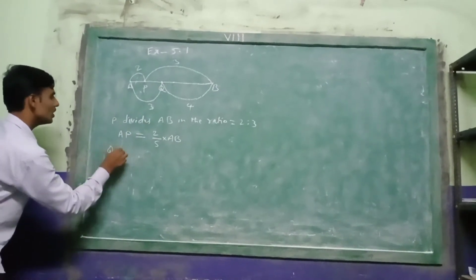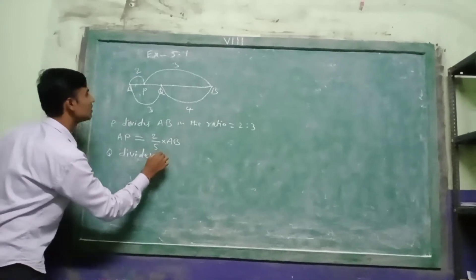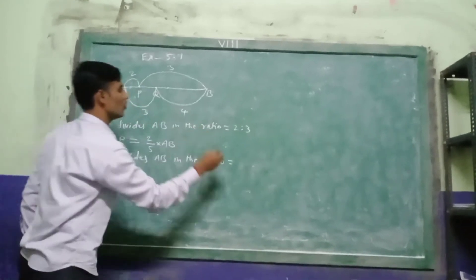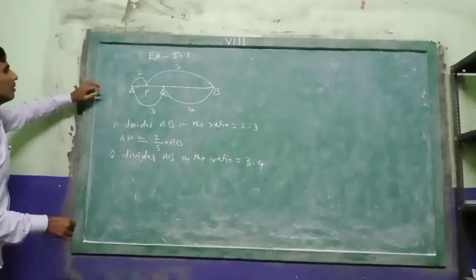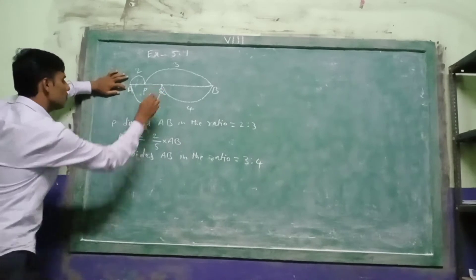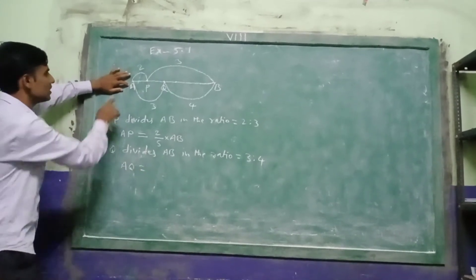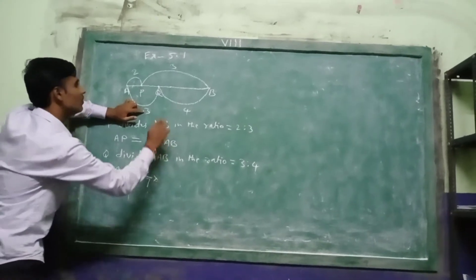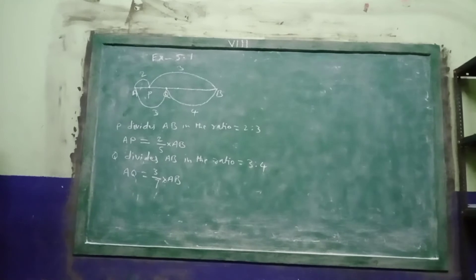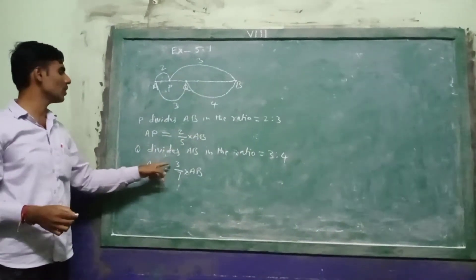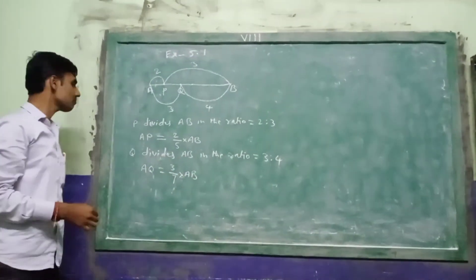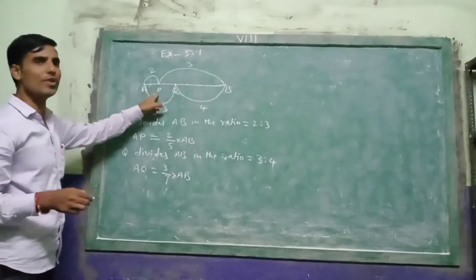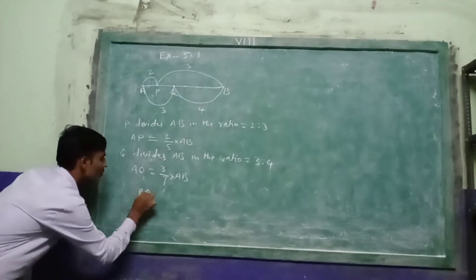Next, Q divides AB in the ratio 3 is to 4. So AQ equal to 3 divided by (3 plus 4) into AB, that is 3 by 7 into AB. So AQ equal to 3 by 7 into AB. In the problem they given PQ equal to 2.